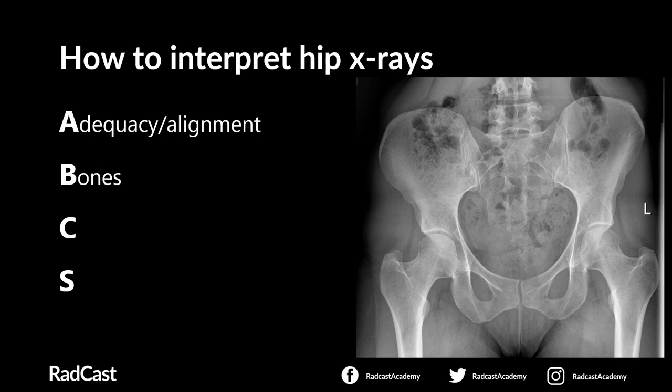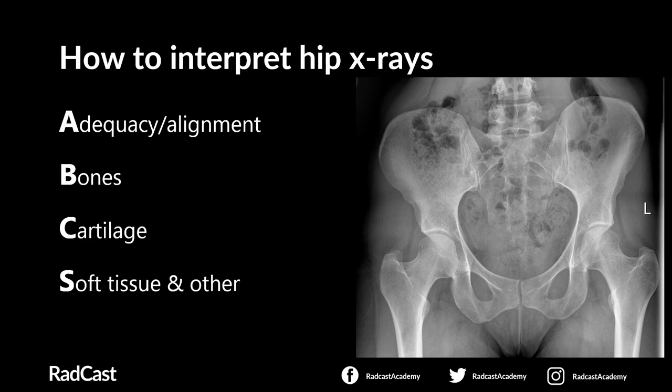Bones is where you're systematically going through each bone checking the outer cortex and the bony texture in the middle, looking for things like fractures and bone malignancy. Cartilage is where we look at all the cartilaginous joints in the hip x-ray — mostly looking for any signs of arthritis or dislocations. And soft tissue and other is a reminder to check the surrounding soft tissue for any swelling or edema, plus a few other things we'll come on to shortly.